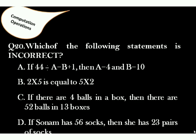Question 20: Which of the following statements is incorrect? Answer is option D, because she has 23 pairs of socks. So 23 pairs means 23 into 2 socks, that is 46 socks.